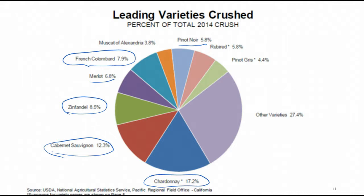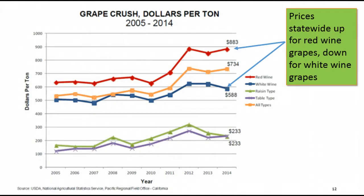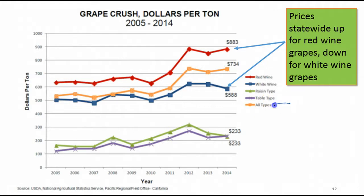You can get all those details on the crush report. Looking at dollars per ton, statewide prices were up for red grapes and down for white grapes in 2014. The red line is red grapes, the blue line is white grapes, the other blue line at the bottom is table grapes, and the orange line in the middle is all types of grapes crushed. So statewide prices were a little up for reds and a little down for whites from 2013 to 2014.